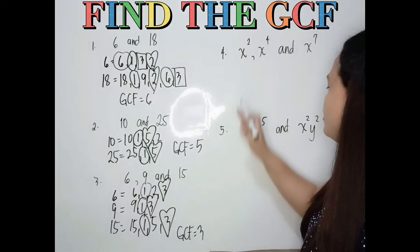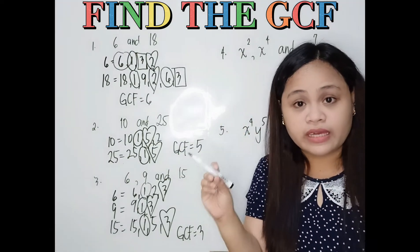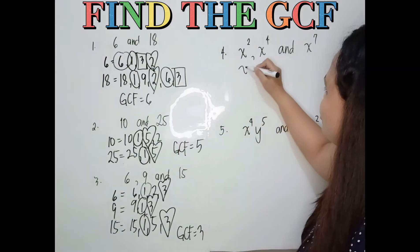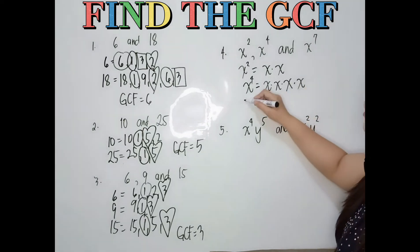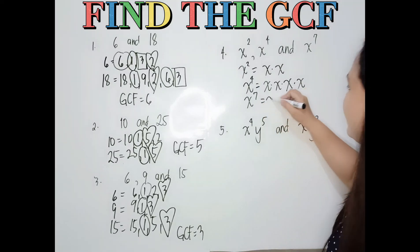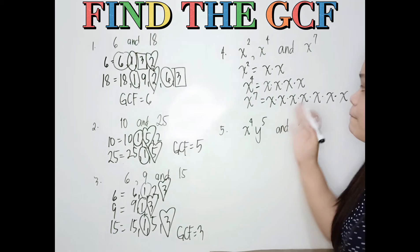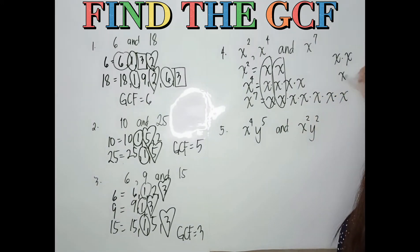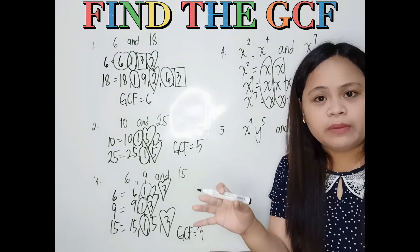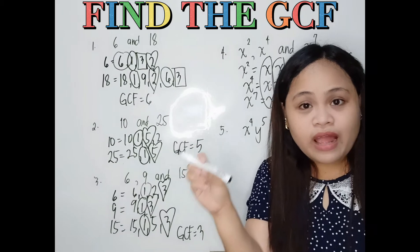When you look at variables, kapag variables na pinag-uusapan, remember that you only need to look for the variable with the least exponent — the one with the lowest exponent. That will be our GCF. For example, with x² , x⁴, and x⁷ — the lowest exponent is 2, so x² would be the GCF. You don't need to list all the factors anymore. Just find the one with the lowest exponent.